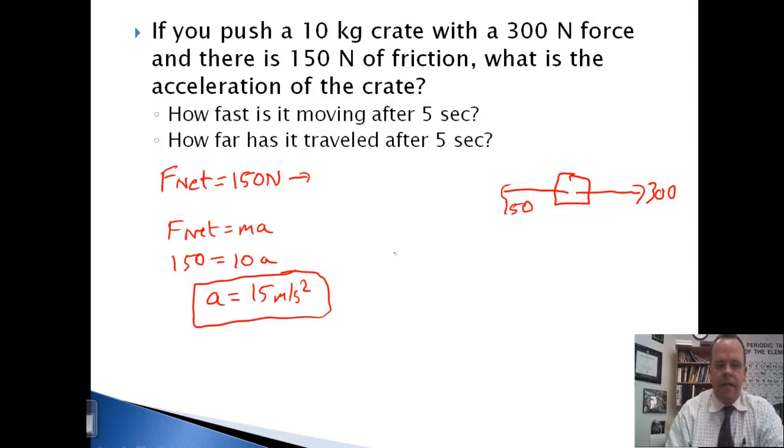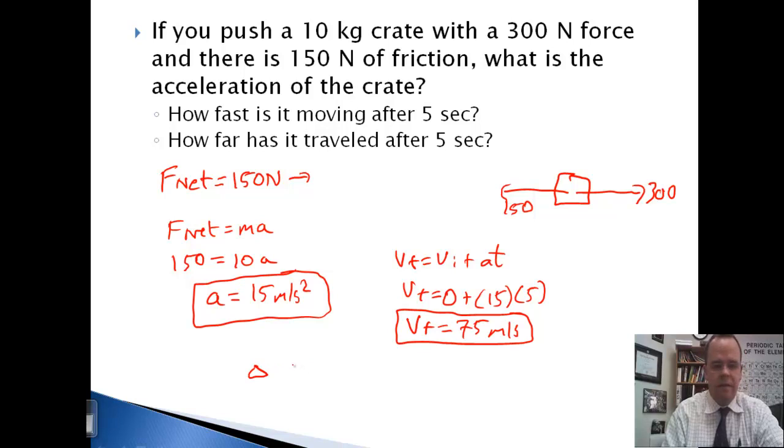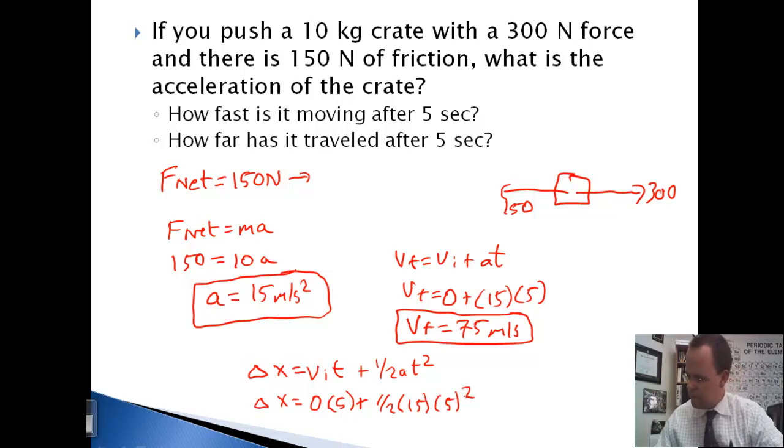How fast is it moving after 5 seconds? V final equals V initial plus AT. V final equals 0, 15 times 5, which is 75 meters per second. Finally, how far? Delta x equals V i t plus 1 half AT squared. V i is 0, t is 5, 1 half, 15 times 5 squared. We get a distance of 187.5 meters.